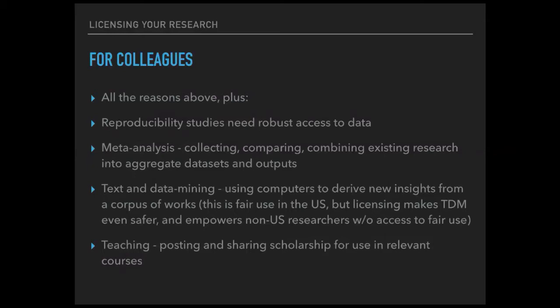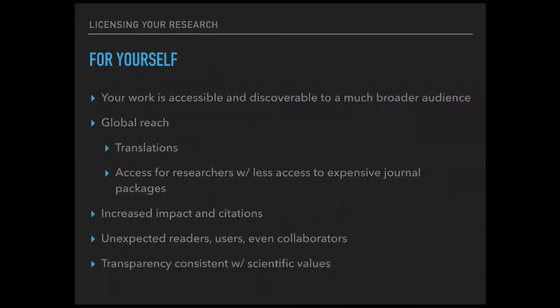Text and data mining — digital humanities is a big thing here at UVA, but text and data mining is useful for all kinds of research. I argue, and the courts have said, this is ordinarily fair use in the U.S. But open licensing can really help give people more comfort — especially outside of the U.S. where fair use isn't available — so they can do text and data mining using your research. And then, finally, for teaching: posting and sharing scholarship in relevant courses. If I want to teach using cutting-edge discoveries in the field, it's really great to know I can put journal articles into my course site for students to read without worrying about whether I have the right license.